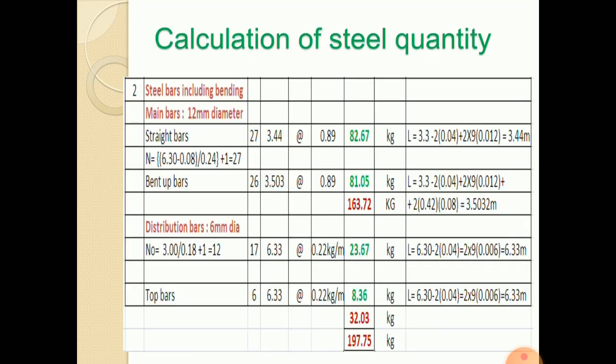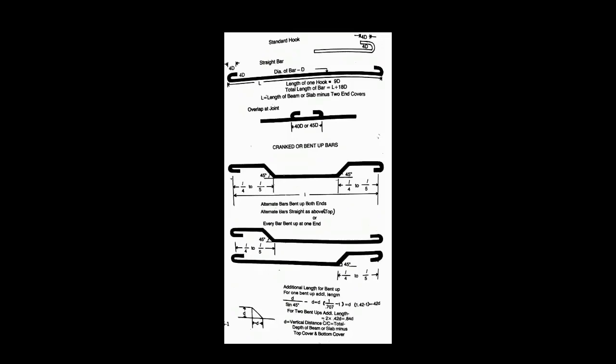If you consider steel, steel consists of two types: one is main steel in shorter span, other is distribution steel. In main steel, alternate bars are bent up. That is, one bar is straight, other bar is bent up. This is the schedule of bars.